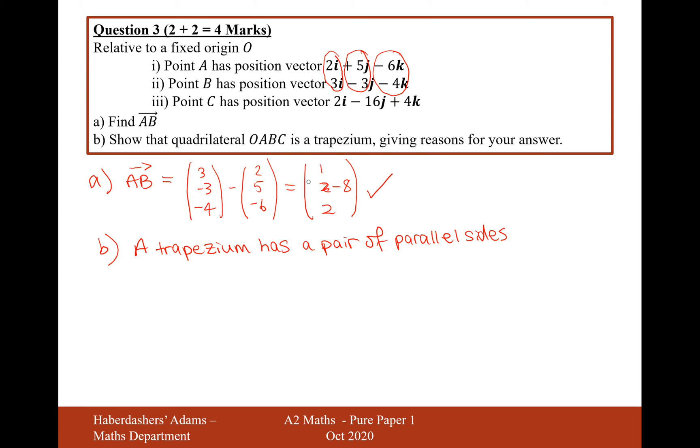And I assume it's got to do something with this AB here. And if I go from O to C, then you can see that that's going to be doubled. So AB is the vector 1, minus 8, 2. And OC is going to be the vector 2, minus 16, 4, which are the two parallel sides.